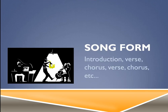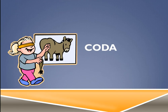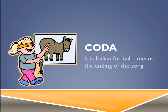Song form is the most popular structure you'd hear — it has an introduction, verse, chorus, verse, chorus, middle eight, chorus, verse, chorus, coda, and so on. Coda — if you're pinning the tail on the donkey, you're pinning the coda, which is Italian for tail — means the ending of the song. It's usually a repeat of the chorus or a small section used to finalize and finish the song.